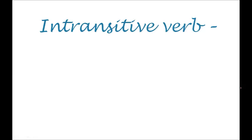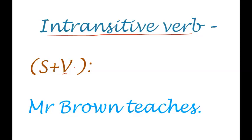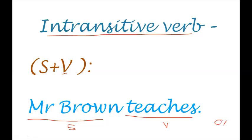Before shifting to ditransitive verbs, I would like to share something about intransitive verbs. In an intransitive verb, we get only a subject and a verb, and after the verb we don't get anything we may call an object. An intransitive verb is a verb without an object. For example: 'Mr. Brown teaches.' Here, 'Mr. Brown' is the subject and 'teaches' is the verb, and the object is missing.